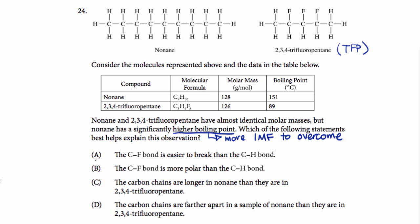So answer choice A says the carbon-fluorine bond is easier to break than the carbon-hydrogen bond. And we know this is a wrong answer because this has nothing to do with intermolecular forces. When something boils, you're not actually breaking any of the covalent bonds. So that doesn't explain anything about the boiling point.